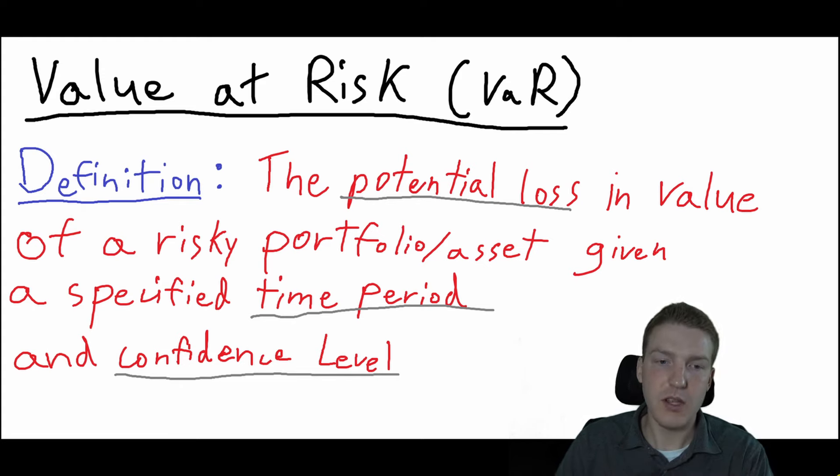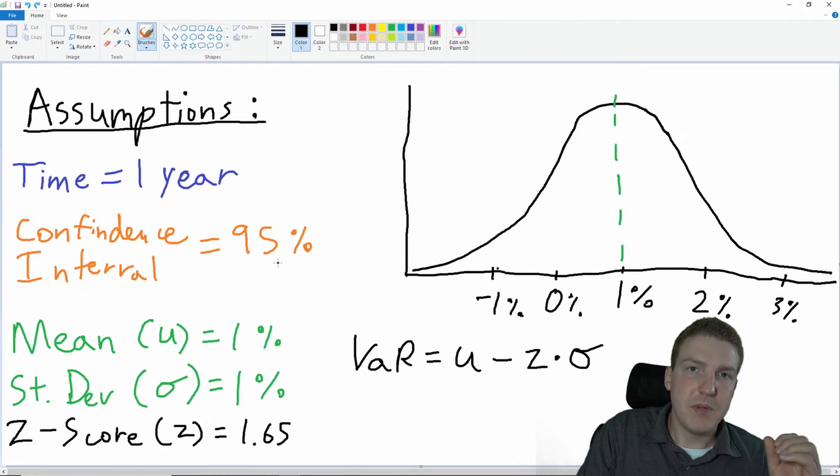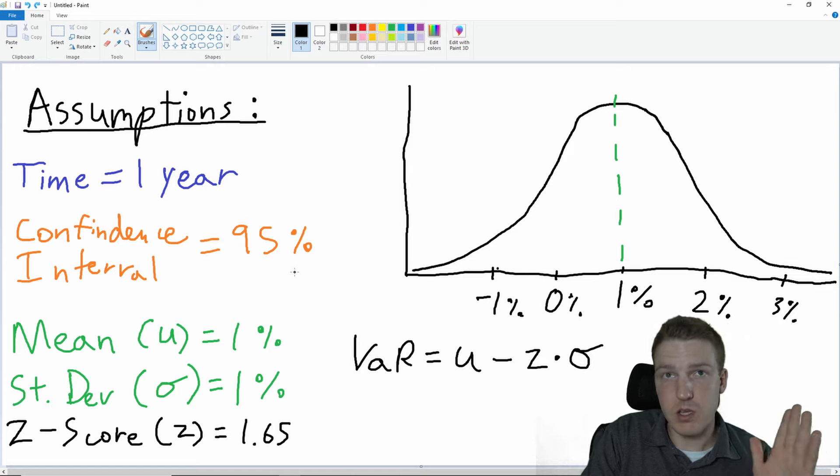Here I've mapped out a basic VaR scenario. Remember, we need a time horizon and confidence interval. We're saying our time horizon is one year and our confidence interval is 95%. When you have a standard normal distribution and a 95% confidence interval, you can look up on any z-score table and find that the z-score is 1.65.